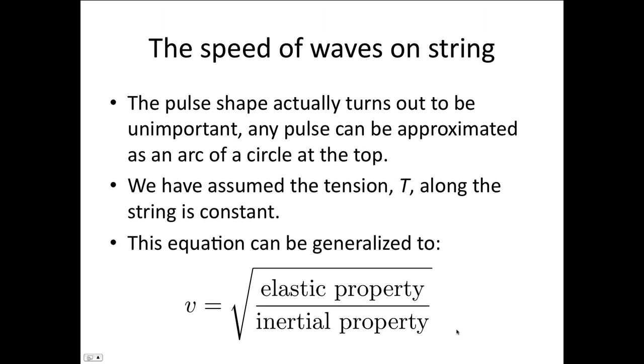Now we assumed that this was a semicircular pulse. It actually turns out that the shape doesn't matter. Any shape can be approximated as a semicircle at the very top. So actually the pulse shape or the wave shape is unimportant. This equation holds for any wave shape. Now we also assumed that the tension T along the string was constant, so that this pulse traveling along the string was not affecting the tension. That's only true if the pulse is fairly small. If the pulse is very large, then it's going to cause the string to stretch, and that's going to add some extra tension.